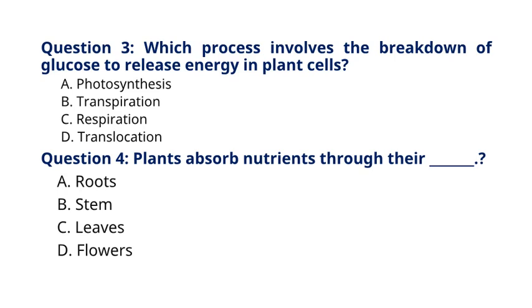Explanation: Plants absorb nutrients primarily through their roots. The root system of a plant is specialized for nutrient uptake from the soil.